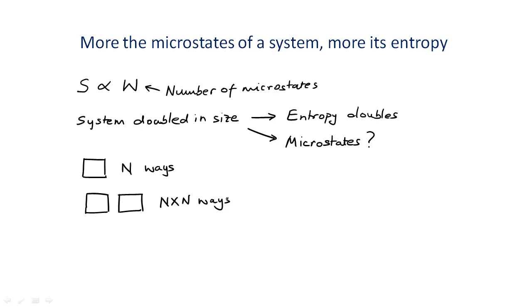This will be even more clear when we review some basic concepts in probability. Anyway, the point is that the doubled system has a squared number of options, but double the entropy.